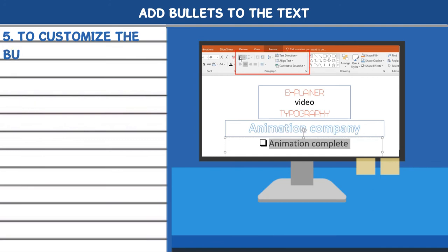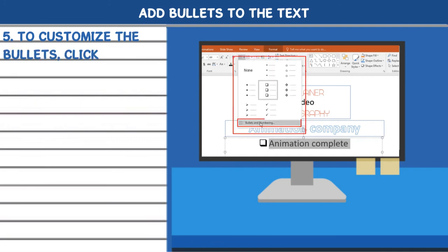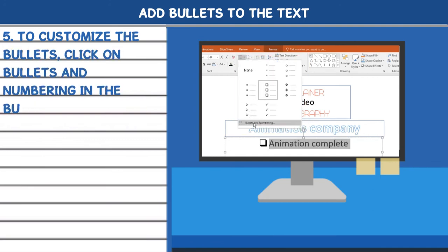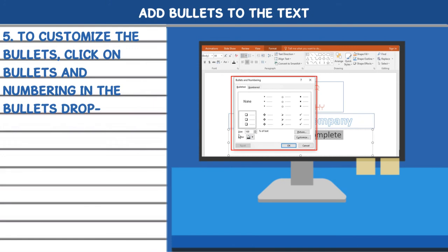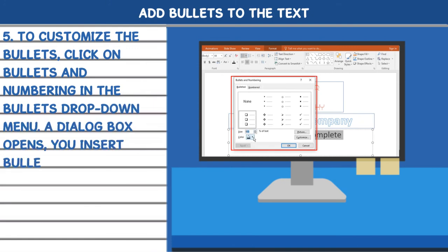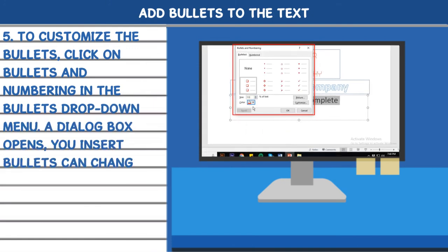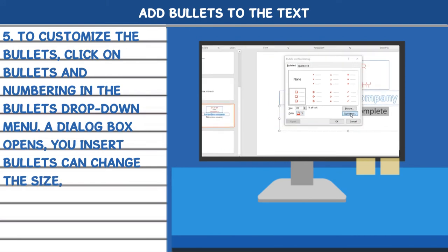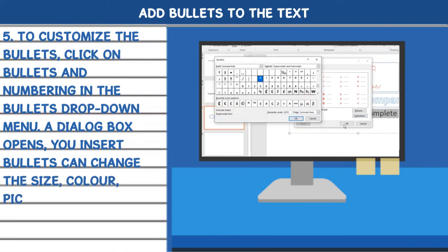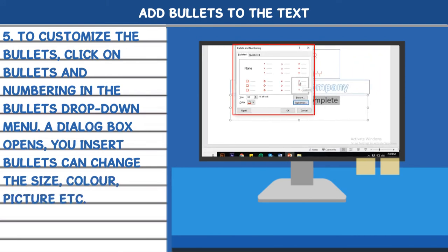5. To customize the bullets, click on Bullets and Numbering in the bullets drop-down menu. A dialog box opens where you can insert bullets and change the size, color, picture, etc.